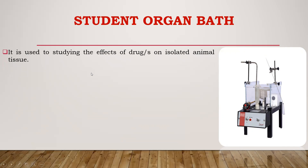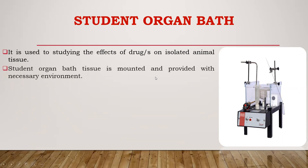This instrument is used to study the effect of drugs on isolated animal tissue. The organ bath contains a physiological salt solution — it is a bath containing water with an organ tube inside. In this tube, you mount the isolated tissue, which is tied to the lever, and the lever records the responses on the drum.